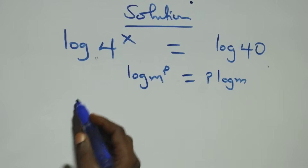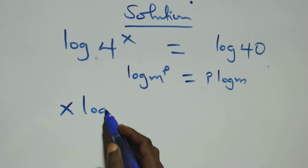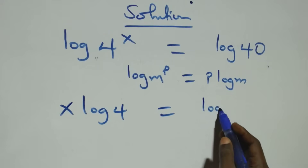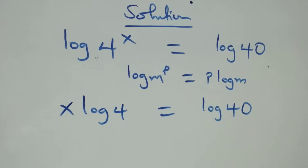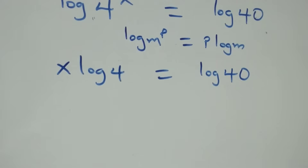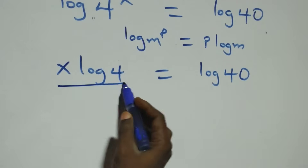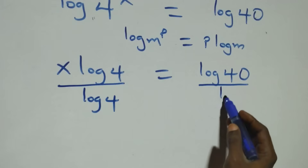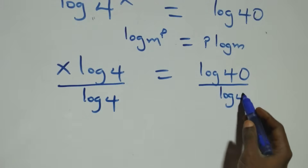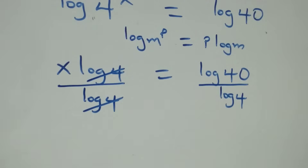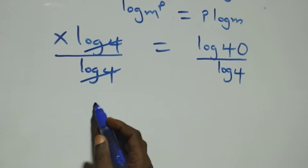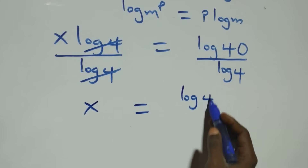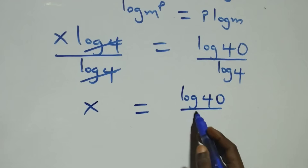This becomes x log 4 equals log 40. From here, we divide both sides by log 4. The log 4 cancels and we have x left, which equals log 40 over log 4.